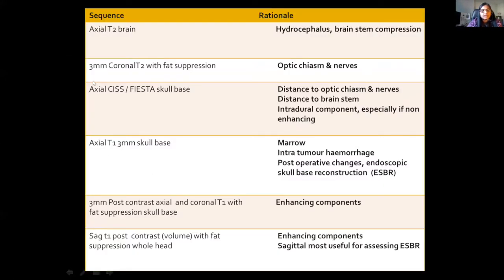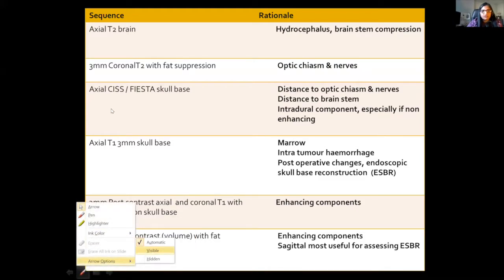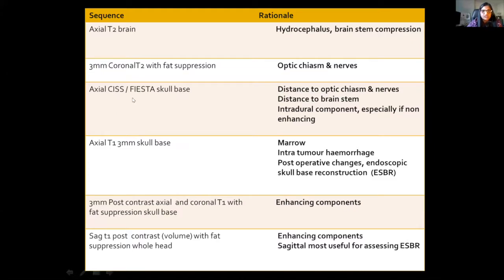The coronal T2 with fat suppression is really good in assessing if there's any signal change in the optic chiasm or the nerves. Heavily T2-weighted steady state sequences such as CISS and FIESTA are extremely useful in assessing the distance between the tumour and critical structures — the optic chiasm, nerves, and brain stem — and in assessing the intradural component, especially if non-enhancing. The axial T1 3mm skull base sequence uses the inherent high T1 signal intensity of fat to delineate tumour margins, and I believe this sequence is wasted if we start fat suppressing it.